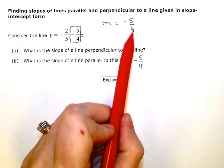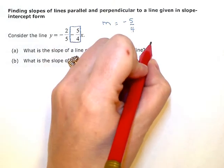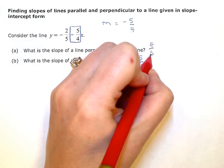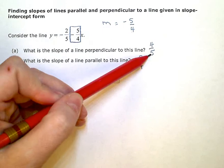Reciprocal means the flipped fraction. So this one is going to be 4 fifths. Opposite sign - this one's negative, this one's positive. And reciprocal.